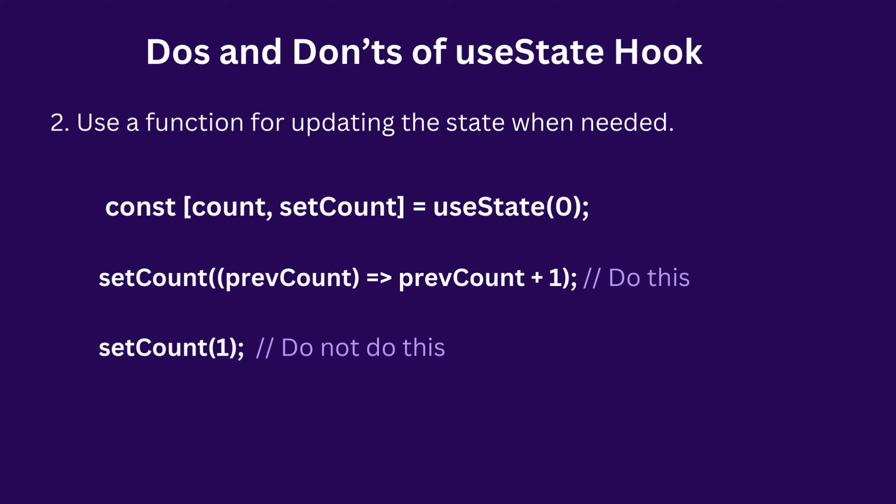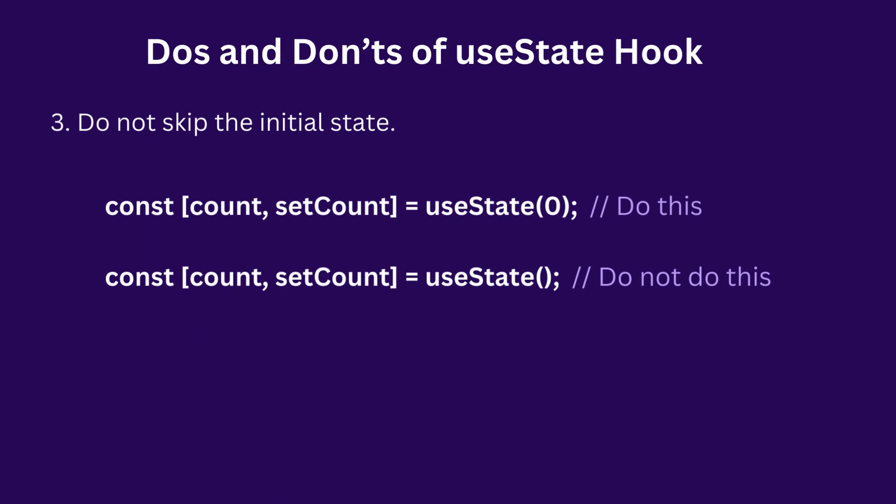The second one is: use a function for updating the state when needed. We know setState takes in a new value or a callback function. It's advisable to use the callback function anytime you want to update the state — we'll better understand this when I open the code editor. The third one is: do not skip the initial state. When the initial state is skipped, you have a null or undefined value. It's advisable to avoid that at all times — always have an initial state. Do not rely on undefined or null.